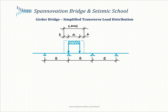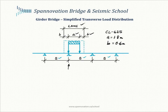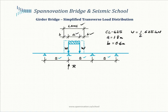Consider girders spaced at a spacing of S. A truck is positioned to maximize the load effect on a particular girder, sitting in the middle of a lane with a wheel spacing of A and a distance from the centerline of the wheel to the edge of the lane of B. For a Canadian CL625 truck, A equals 1.8 meters and B equals 0.6 meters. The load at each wheel line is W, equal to half of 625 kN.